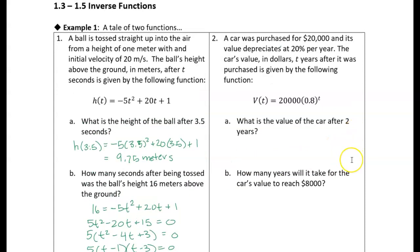Now let's look at the second function. We have a car purchased for $20,000 that is depreciating at 20% per year. The car's value in dollars is given by v(t) = 20,000 × 0.8^t, where t is in years.